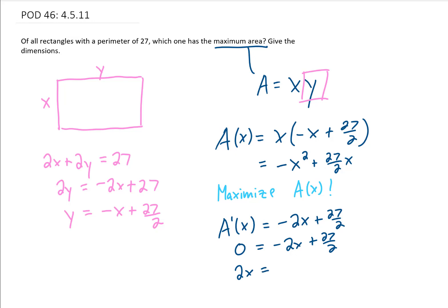I'm going to add 2x to both sides, and I'm going to divide both sides of this equation by 2 to get that x equals 27 fourths. And this here is our critical point.